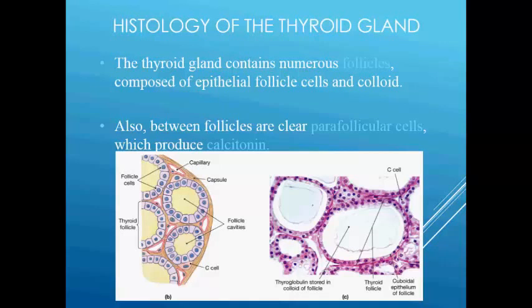The thyroid gland contains numerous follicles and it is composed of epithelial follicle cells and colloid. A thyroid gland has a thin covering of connective tissue and fibroelastic capsule. Internally, it gives rise to many septa called trabeculae which divide the gland into many lobules. These are the lobules — internally it gives rise to many septa which is known as trabeculae, dividing the gland into many lobules.